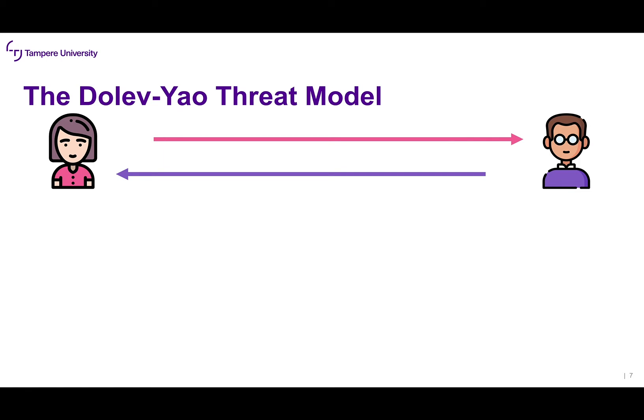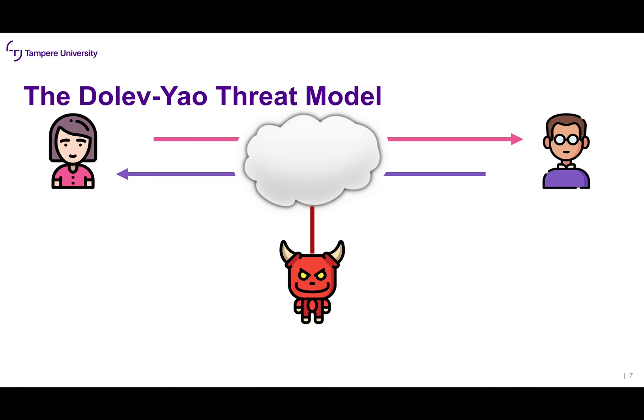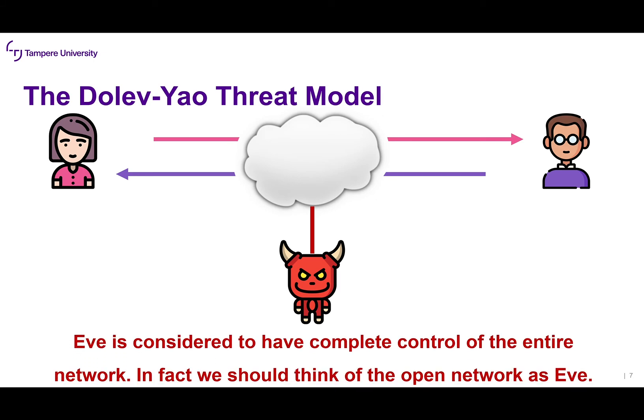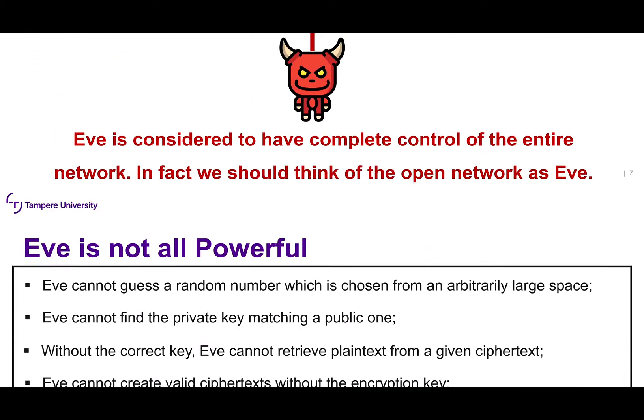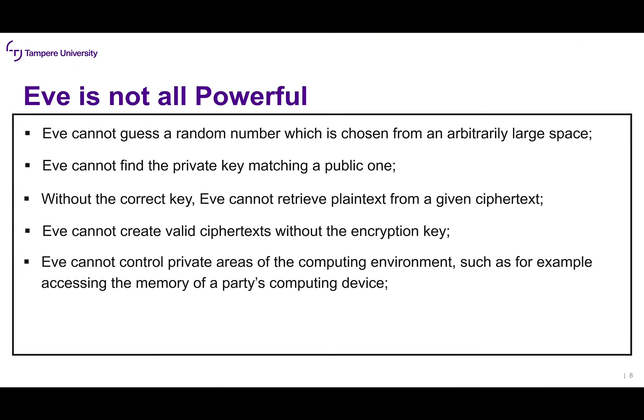If you want to look at the details of the Dolev-Yao threat model, here is the paper published at SFCS in 1981, titled 'On the Security of Public Key Protocols.' In other words, what the Dolev-Yao threat model says is that Eve has full control of the network that Alice and Bob are using to communicate. We should always think of the open network as Eve.